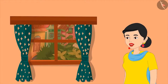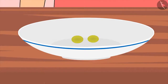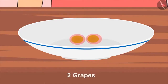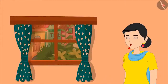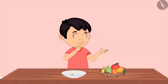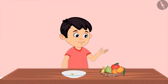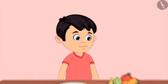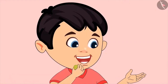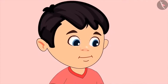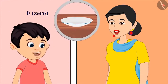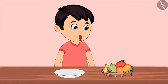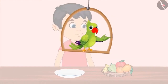Chotu eats one more from the two grapes — now one grape is left. If he eats the last remaining grape, how many are left? Not a single one — that means zero. Now all the grapes are finished. Did you see, friends? Chotu has developed a good understanding of zero.